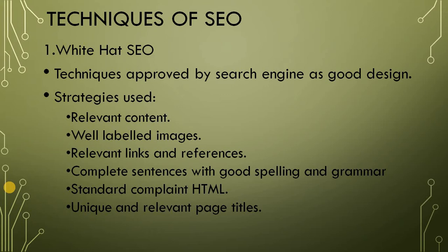Now different strategies which can be used are: relevant content. So if your topic is global warming, when you are writing the entire page related to global warming, you are providing relevant links, relevant information, and well-labeled images. The second important thing is that all images must be well labeled. When you are using White Hat SEO, if the images are well labeled, it is going to help the search engine to rank your site higher.